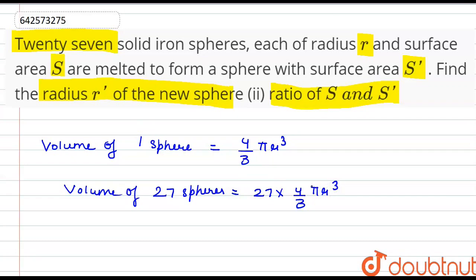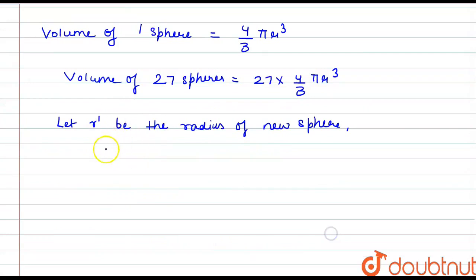Let r' be the radius of the new sphere. The volume of the new sphere would be 4/3 π r'³.